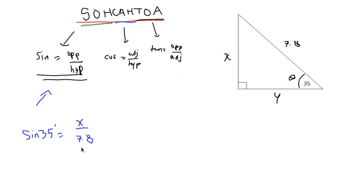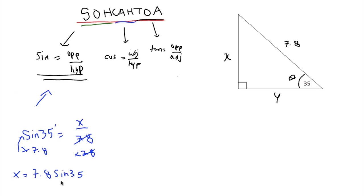Now we want to solve for x, so we're going to multiply 7.8 on both sides. Doing that cancels out the 7.8 on one side and adds the 7.8 in front of the sine. So this gives us x equals 7.8 sine 35. If you plug this into the calculator, you would get approximately 4.5 units. I rounded this number up to the nearest tenth. So using the sine ratio, we identified that the x value is 4.5 units.